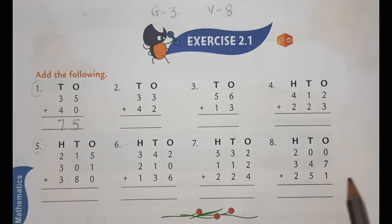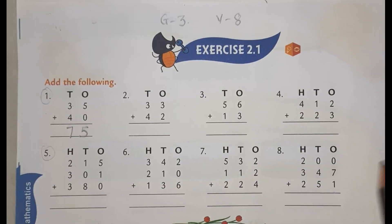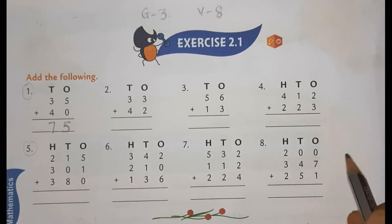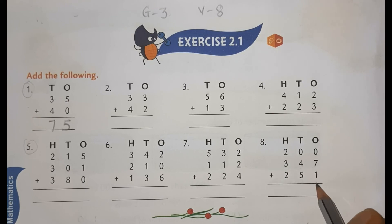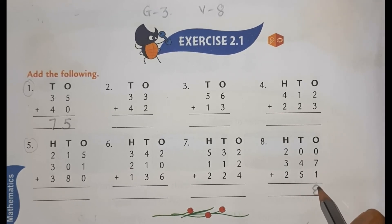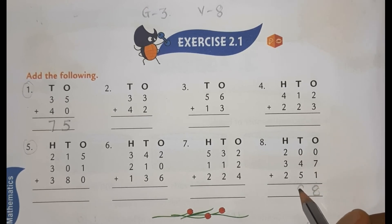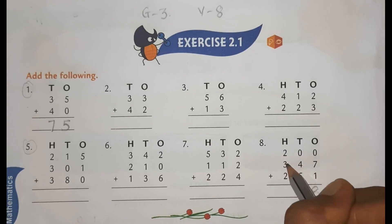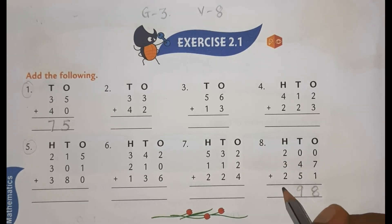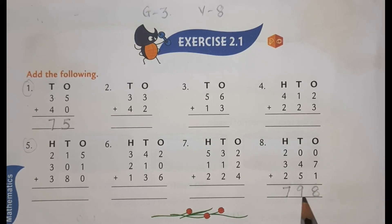Now, I will do also last sum. First and last sum I will do. And all other sums are homework for you. So, 0, 7, 1. 7 plus 1. We will write here 8. Then 0, 4, 9. 5 plus 4, 9. Then 2 plus 3, 5. 5 plus 2, 7. So, the number is 798.